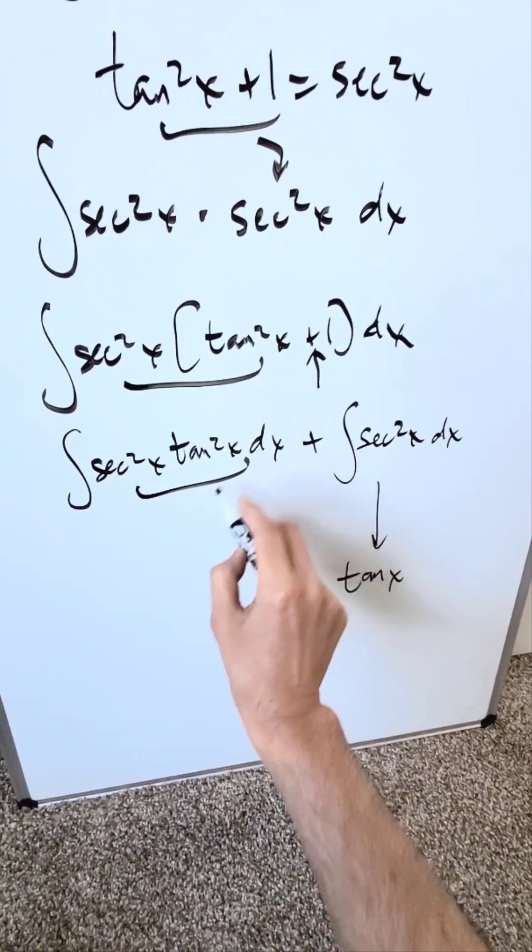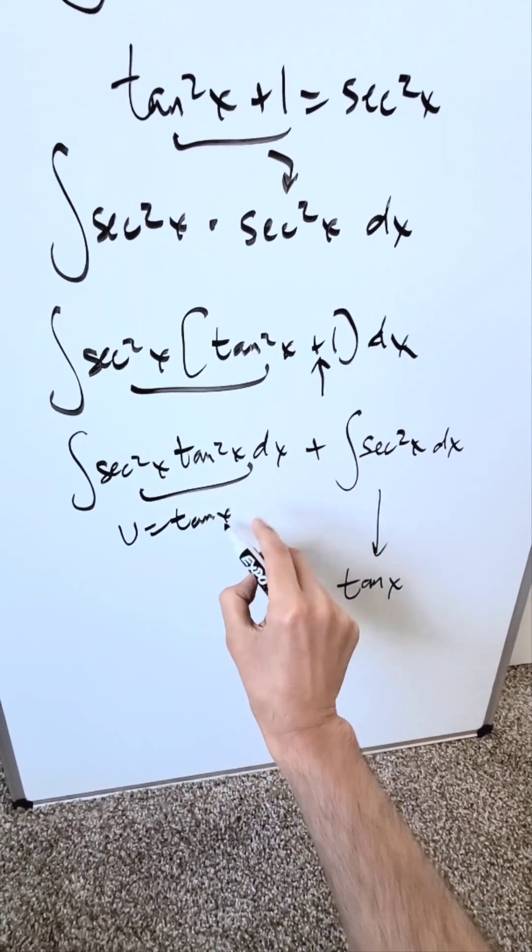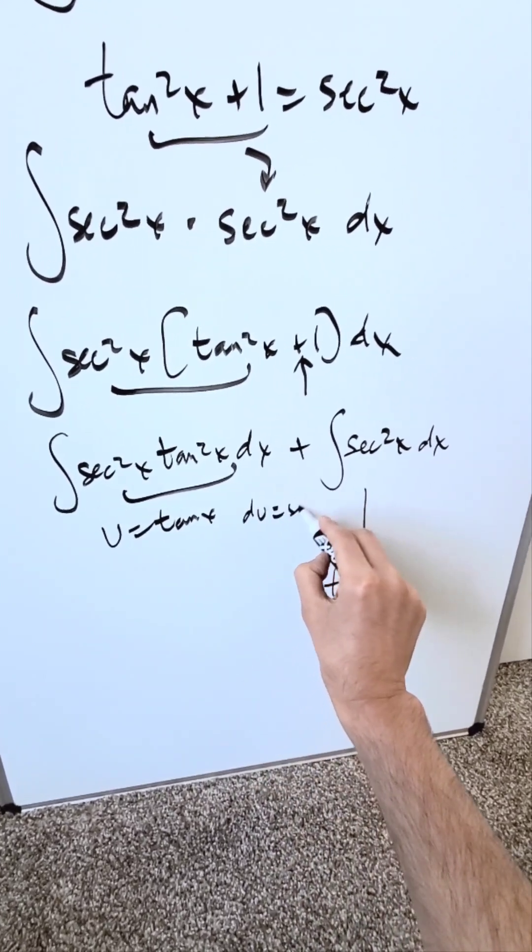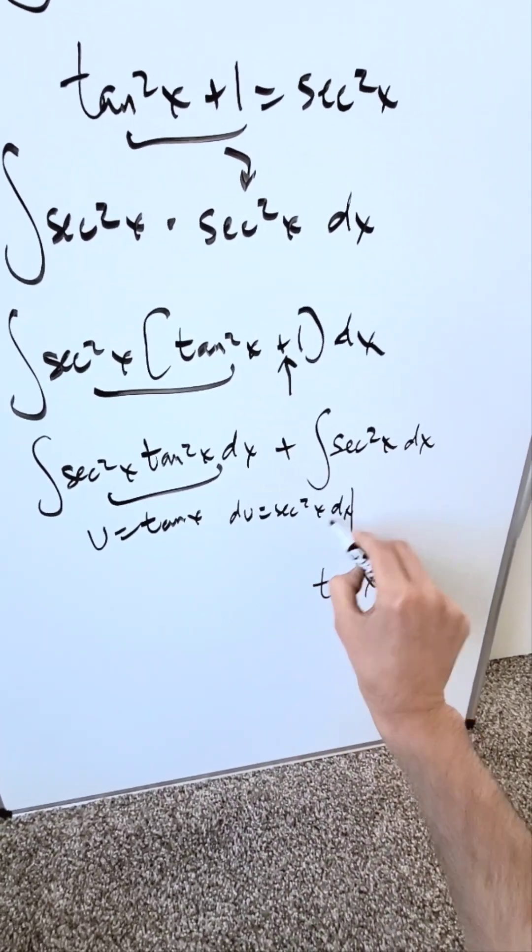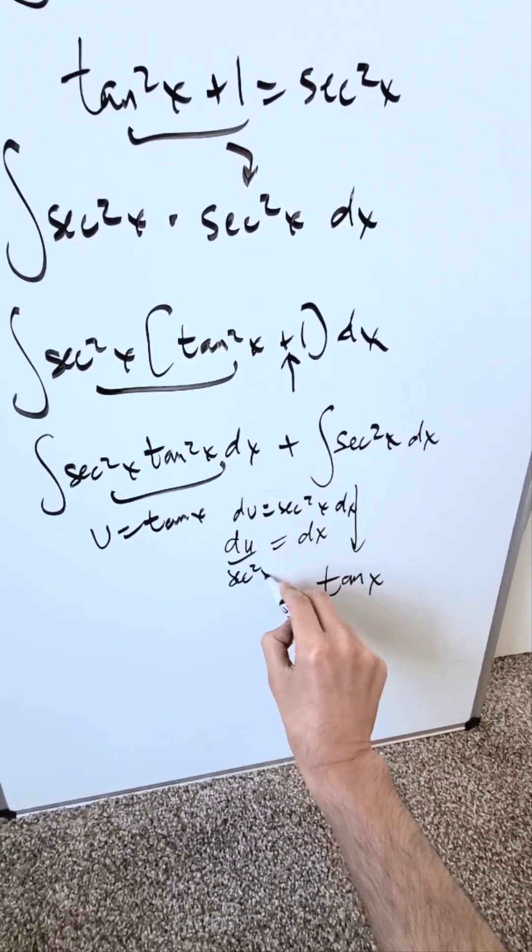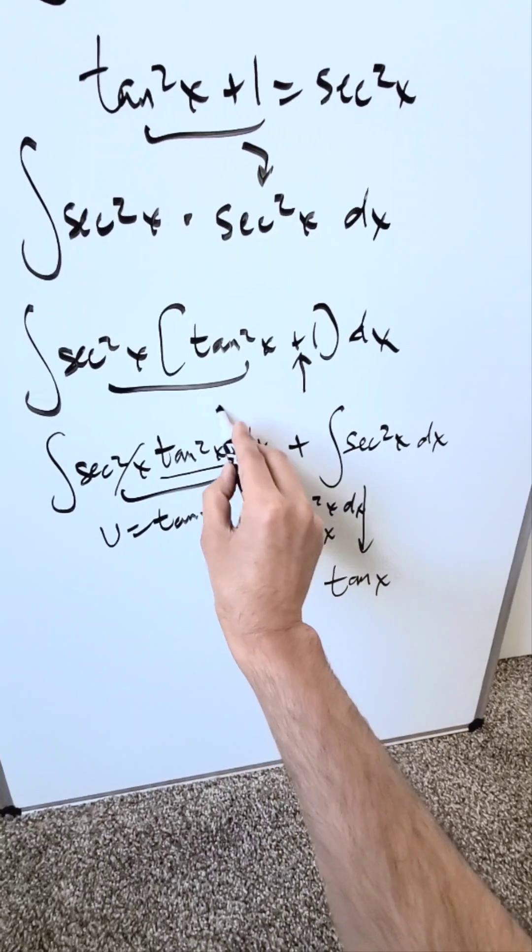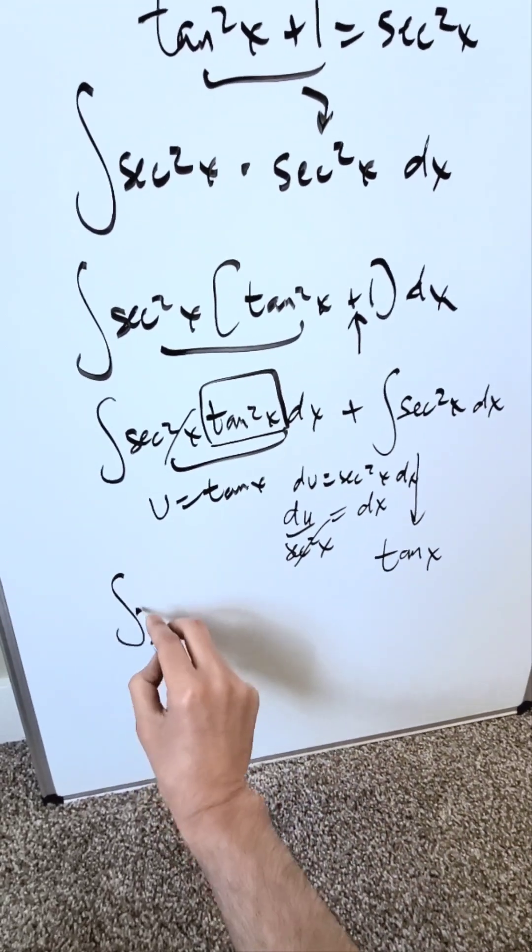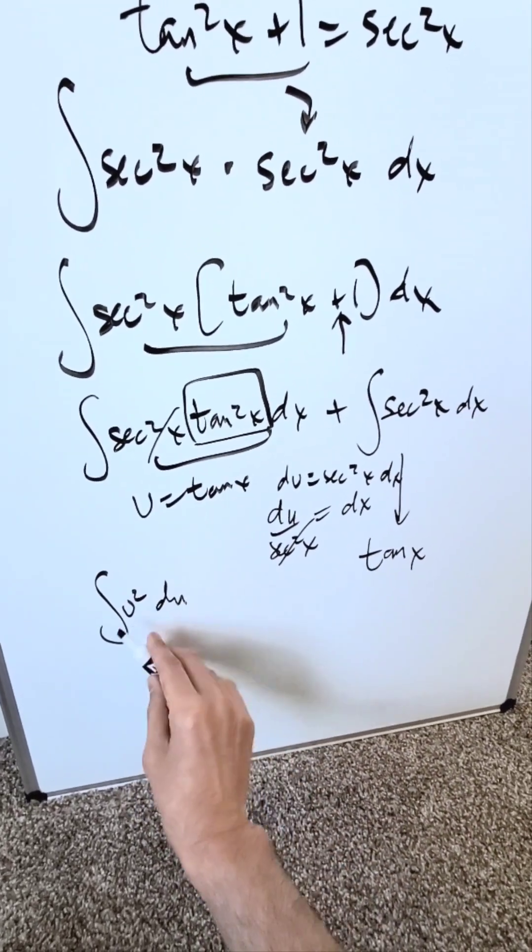Now we're coming over here. We'll do u-substitution. If u is equal to tan x, we know here du is equal to secant squared x dx. dx is equal to du over secant squared x. This will cancel out with that. You'll bring in your u over here. You are looking here at a u squared du, and it's easy.